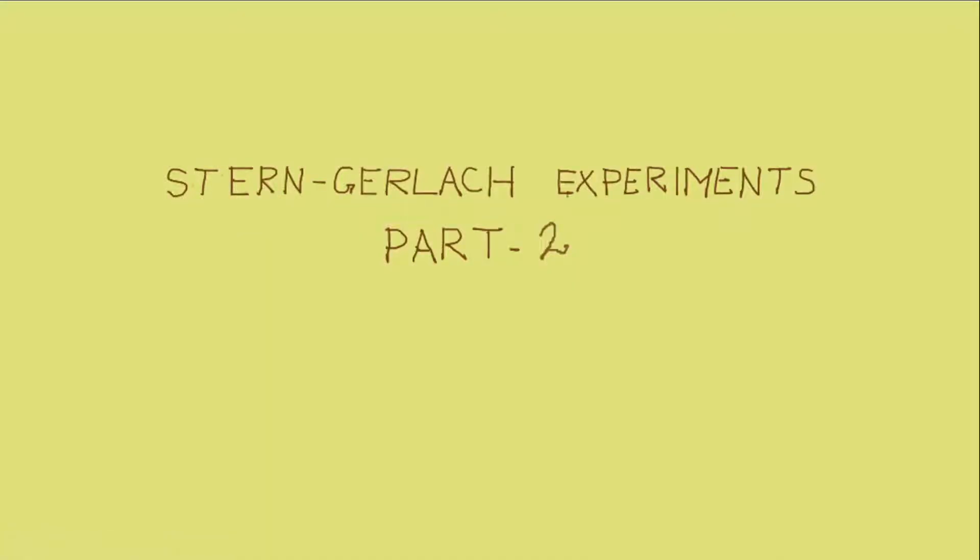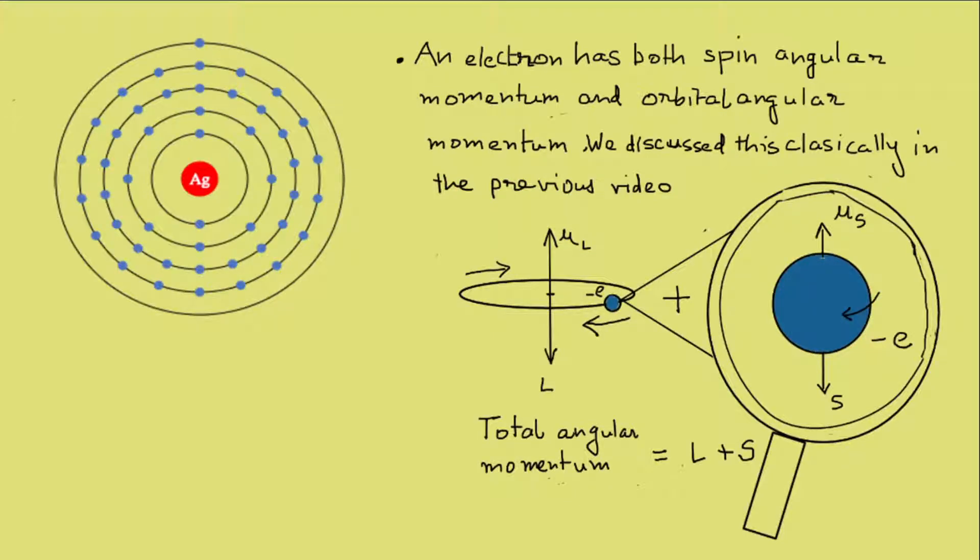In the last video, we spoke about angular momentum of a charged particle and the effect of an inhomogeneous magnetic field on the dipole. Moving on to the actual Stern-Gerlach experiment, the experiment was conducted with a collimated beam of vaporized silver atoms passed through an inhomogeneous magnetic field.